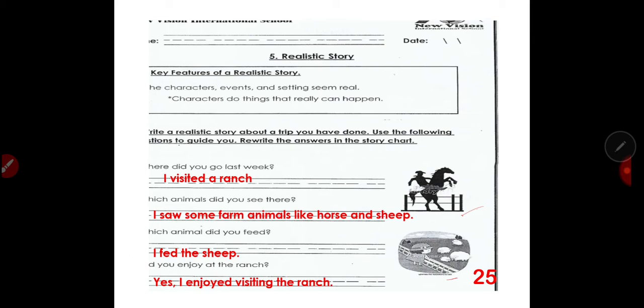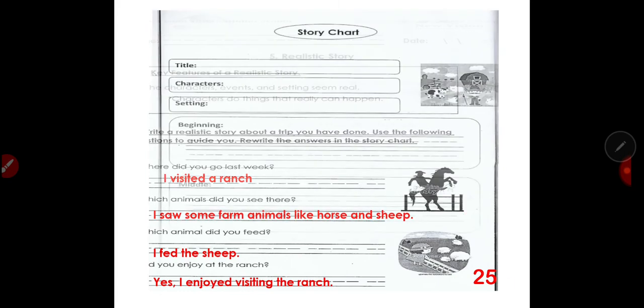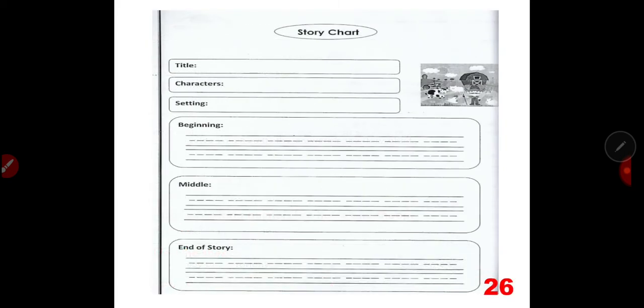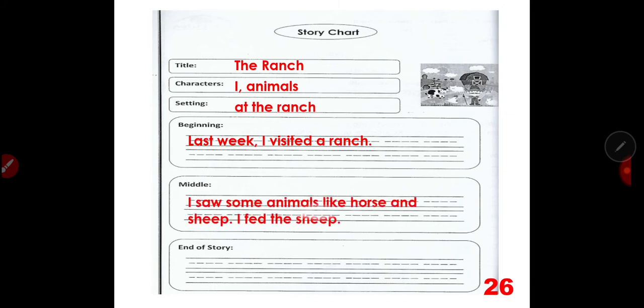All these answers, you are going to write them or rewrite them in the story chart at the back of page 25. So, it is very easy. Copy and then write them on page 26. Here is the story chart. What is the title of the story? And that is The Ranch. Who are the characters, of course, I and animals. The setting at the ranch. What is the beginning of the sentence? Last week, I visited a ranch. What about the middle? I saw some animals like horse and sheep. I fed the sheep. In the end of the story, I enjoyed visiting the ranch.